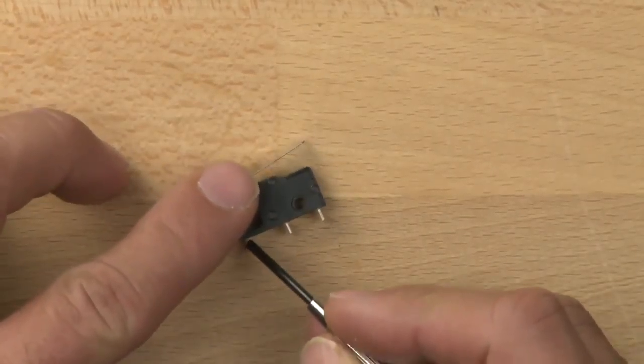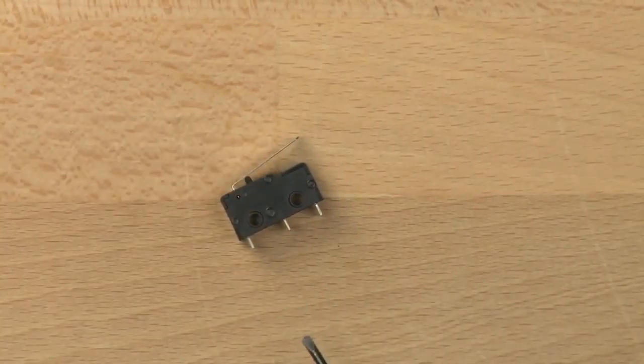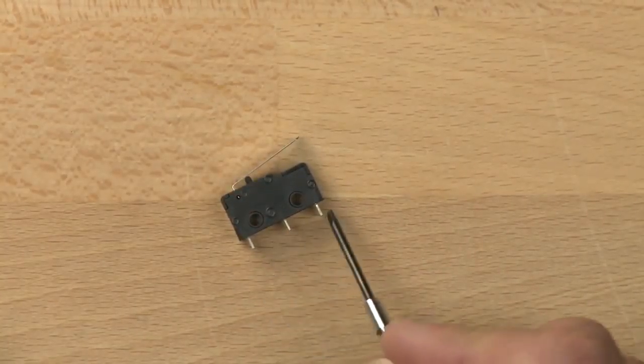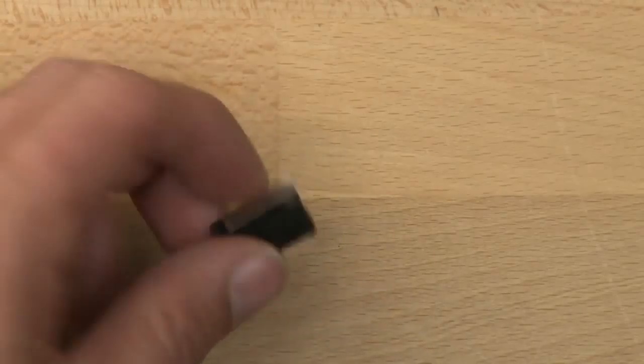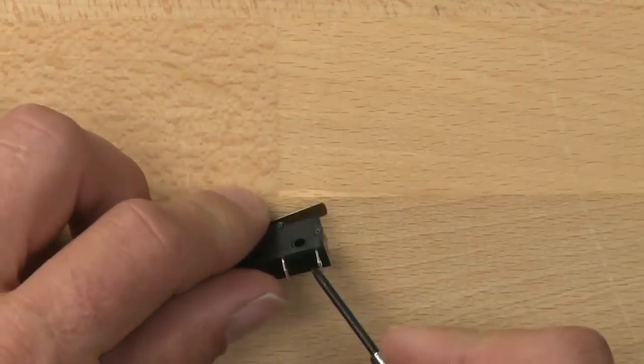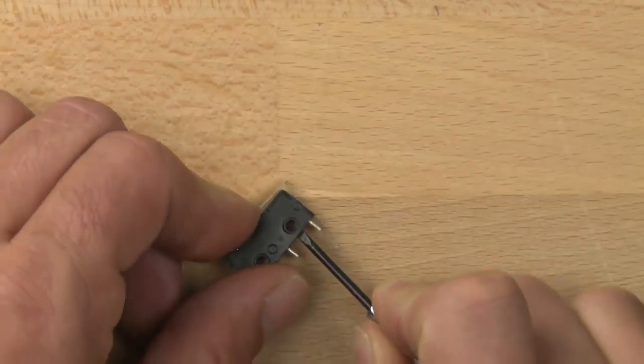So we have one pole right here and two throws. And what that basically means is that we can connect to three different locations on this switch and control the power in two circuits.